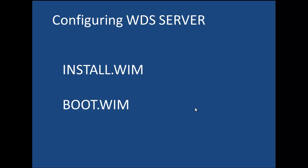Now, the boot.wim. You cannot create an install image of Windows while Windows is running. So you need to boot your computer using a Windows pre-installation environment, and this is where your boot file comes in. The boot image is a bootable copy of the Windows pre-installation environment that automatically contacts the WDS server over the network when the computer boots up. You need that boot file to create what we call a capture image.